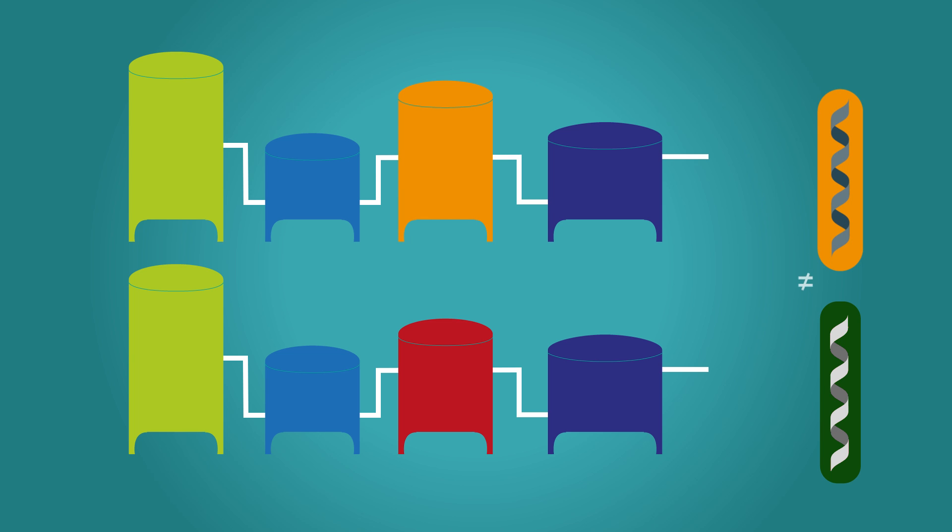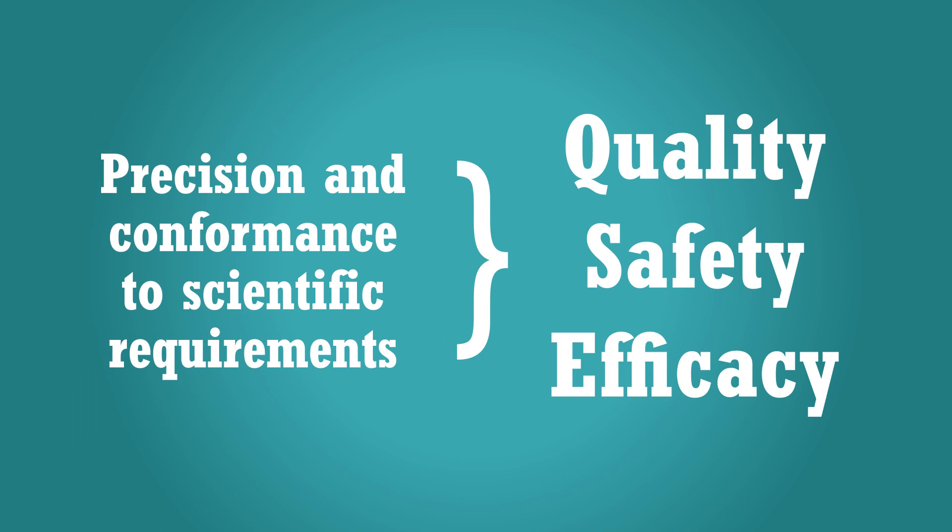In fact, even small changes in the manufacturing process can alter the final product. That's why precision and conformance to scientific requirements are necessary to ensure quality, safety, and efficacy.